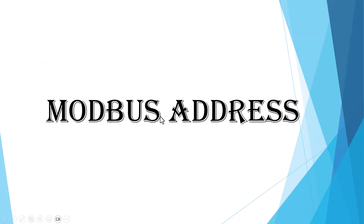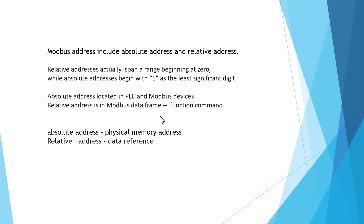Hello, today we talk about Modbus Address — including Absolute Address and Relative Address. Relative Address actually begins at zero. Absolute Address begins with one. Absolute Address is used in the PLC and Modbus device. Relative Address is used in the Modbus data frame function command. Sometimes people call Absolute Address a fixed memory address, and Relative Address is called a data reference.